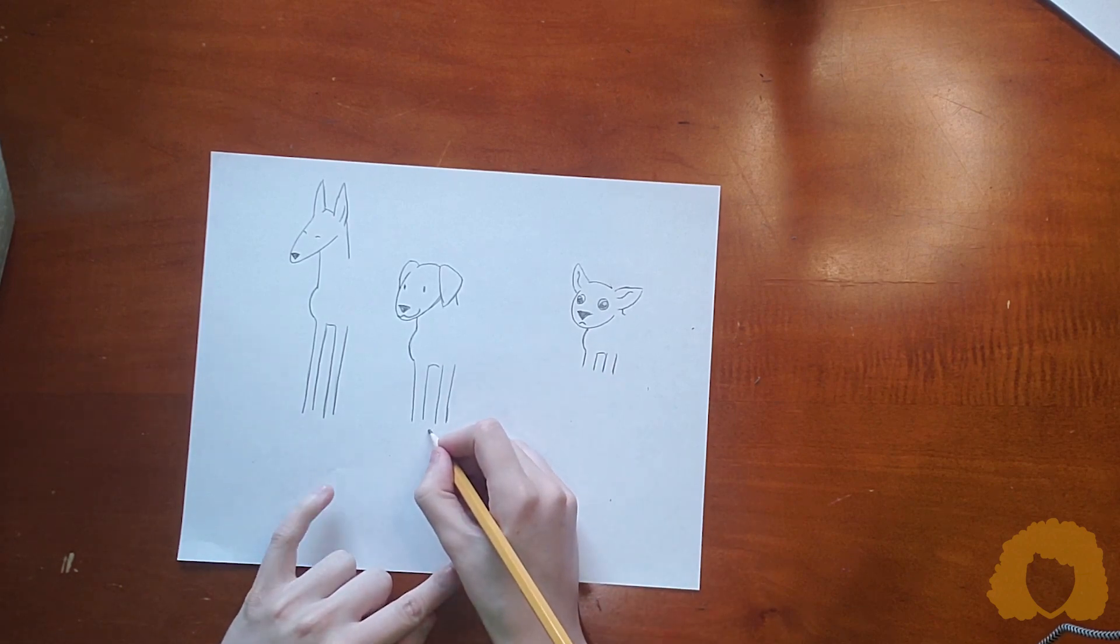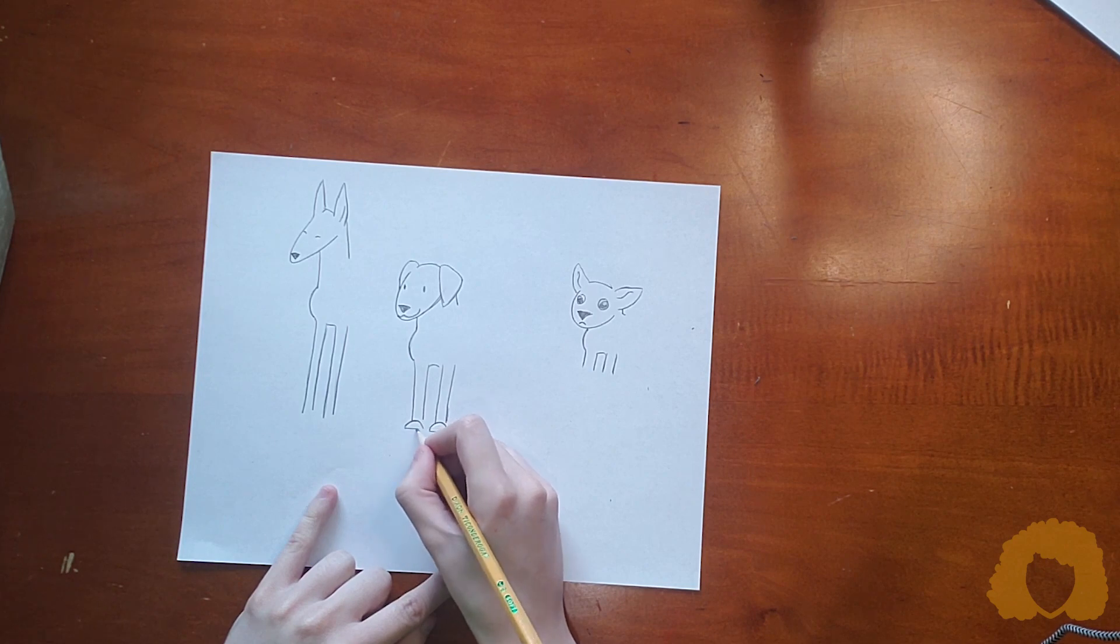Then for our toes, we're going to draw a half circle for our paws with three lines.